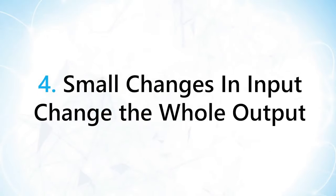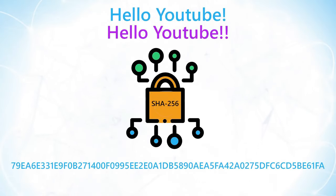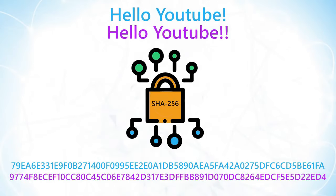Property 4: A small change in the input changes the whole output. Even the smallest change in input must have huge ramifications on the output. This is a critical function that aids in making the function pre-image resistant.